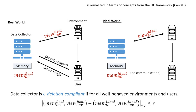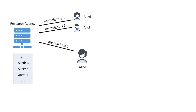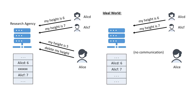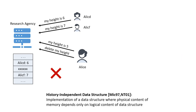Let us see what this definition says about the examples we saw earlier. The first example is the one where the research agency merely crosses out Alice's data when she asks for deletion. Is this deletion compliant? In the ideal world, Alice never communicates anything, so the memory at the end of the ideal execution has no entry for Alice — there is no crossed-out entry there. The memory of the data collector differs between the real and ideal world, so this is clearly not deletion compliant. But is there a way to make this deletion compliant? It turns out there is. There has been study of data structures that have the property that if you insert something and then delete the same thing, it looks as though you never inserted at all — these are called history-independent data structures.